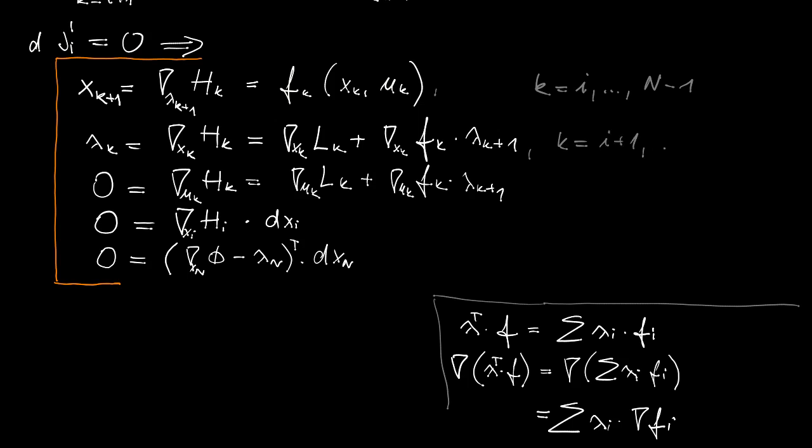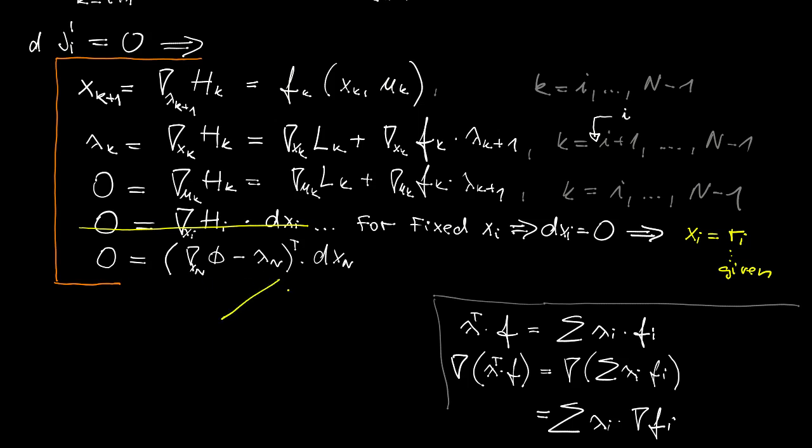Now, all these first three conditions are actually representing a bunch of equations parameterized by the discrete time k. And now, note that for the second equation, I can include somewhat arbitrarily another lambda, which I will not use later, just in order to make all these three equations, starting with k at i. And now, concerning the fourth inequality for fixed initial state, I can replace the whole condition just by the condition that the initial state is equal to r.